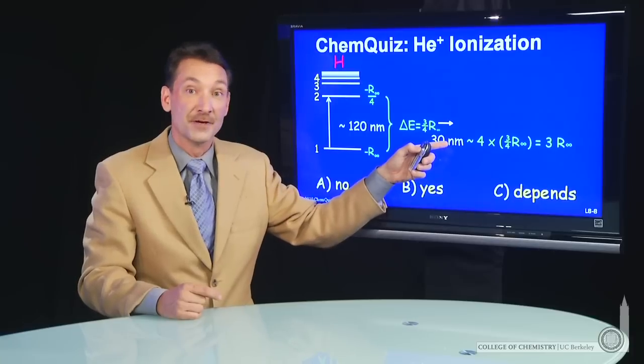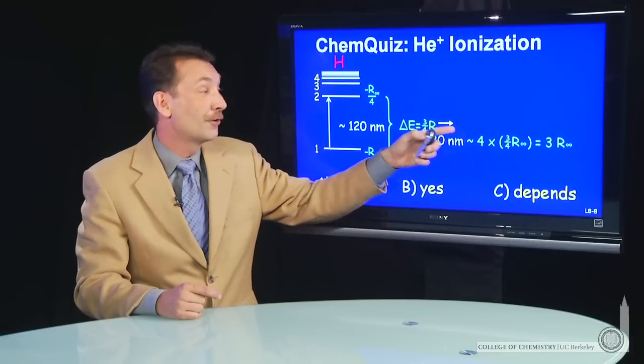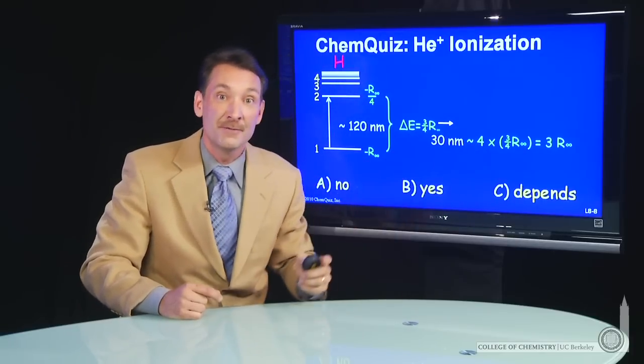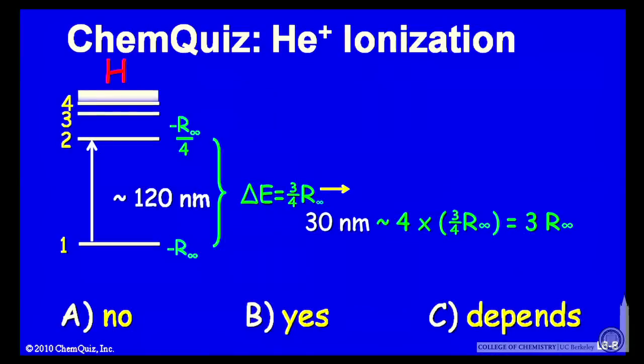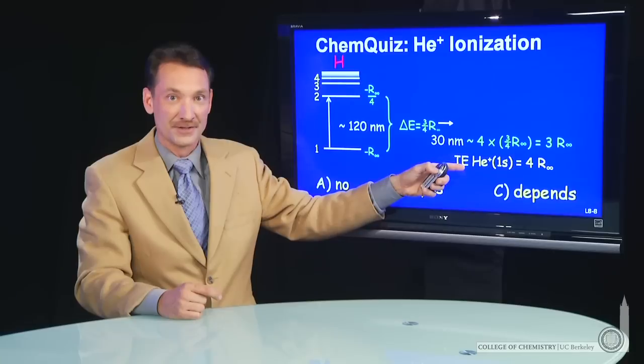We have a 30-nanometer photon, which is four times as energetic. Four times as energetic gives us three Rydbergs of energy. But we know when helium is in its ground state,